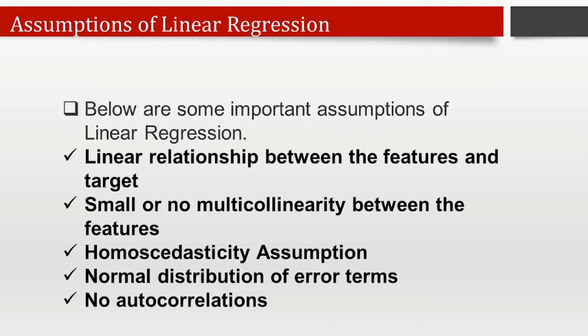Assumptions of linear regression. There are some important assumptions and formal checks when building a linear regression model to get the best possible results from the dataset. First, linear relationship between features and the target: linear regression assumes a linear relationship between dependent and independent variables. Second, little or no multicollinearity between features: multicollinearity means high correlation between independent variables, which makes it difficult to determine which predictor variable is affecting the target variable. The model assumes little or no multicollinearity.